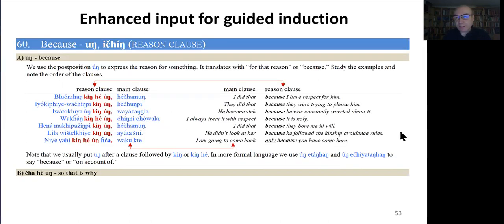An example of enhanced input for guided induction comes from unit 60, which introduces the reason clause and the words that express because. So the instruction in section A says: we use the postposition u to express the reason for something. It translates with for that reason or because. Study the examples and note the order of the clauses. So observe the enhanced input especially through the concordance style layout and also the color coding for highlighting the newly introduced function words for because, and most importantly the arrows that allow the learner to observe that the order of the two clauses is reverse when comparing Lakota and English and also the fact that they can see that there are two clauses in this construction.